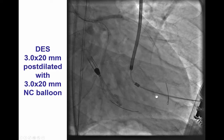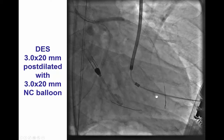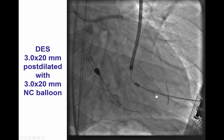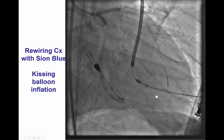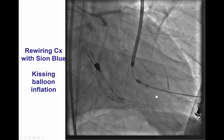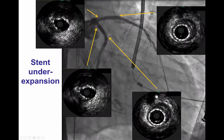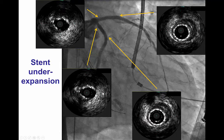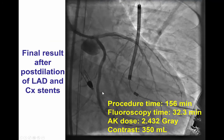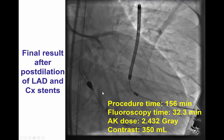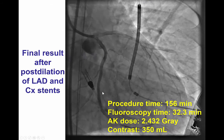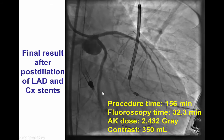We then deployed a 3.0 by 20 mm stent in the LAD, with rewiring into the circumflex with a workhorse guidewire and then performing a final kissing balloon inflation. That restored TIMI flow in both the LAD and the circumflex. However, intravascular ultrasound showed severe under-expansion of the stents both in the proximal LAD as well as the proximal circumflex. We therefore did additional balloon dilations at high pressure that successfully expanded both the circumflex and the LAD.